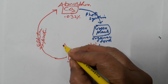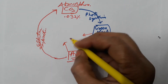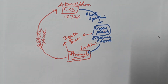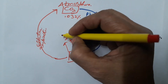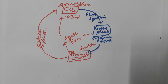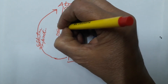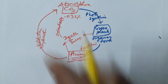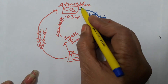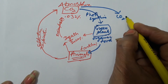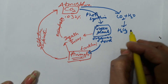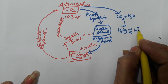When animals and plants die, the death and decay of these living organisms takes place by decomposers present in the environment. In the process of decomposition, CO2 is again released and goes into the environment. The CO2 present in the atmosphere combines with rain water and forms weak carbonic acid. This weak carbonic acid dissociates to form hydrogen ions and carbonate ions.